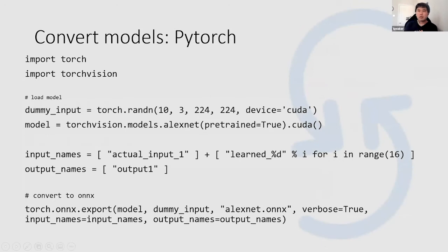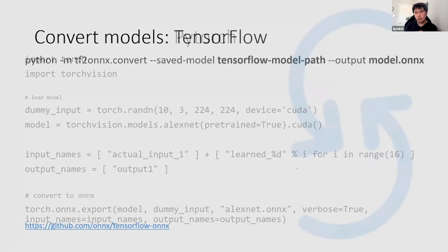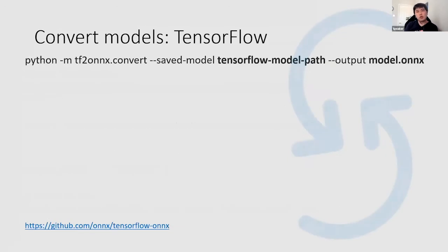A typical example of how you'd use this in PyTorch: in this case I'm using AlexNet. There's a torch.onnx.export function — you just have to know which one depending on the framework. There's also a command line utility to try it out, and a lot of it is in Python. For TensorFlow, the command is tf2onnx convert with your saved model path and output path.